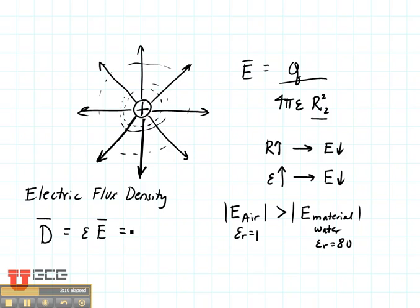So the electric flux is proportional to the charge, inversely proportional to 4 pi and the distance squared. The epsilon value, this epsilon value, has been normalized out.